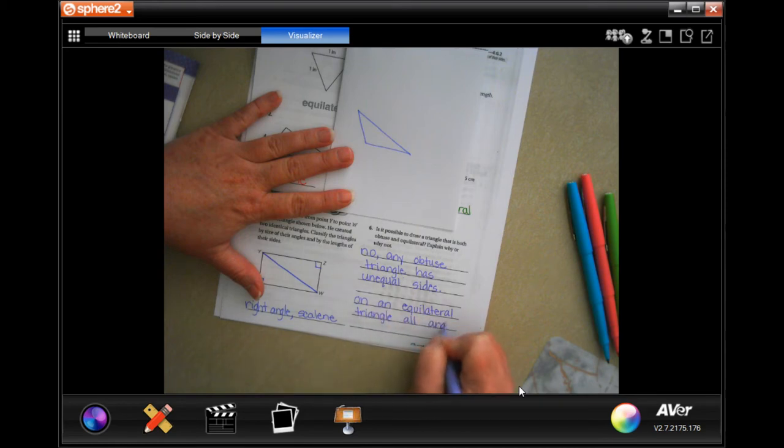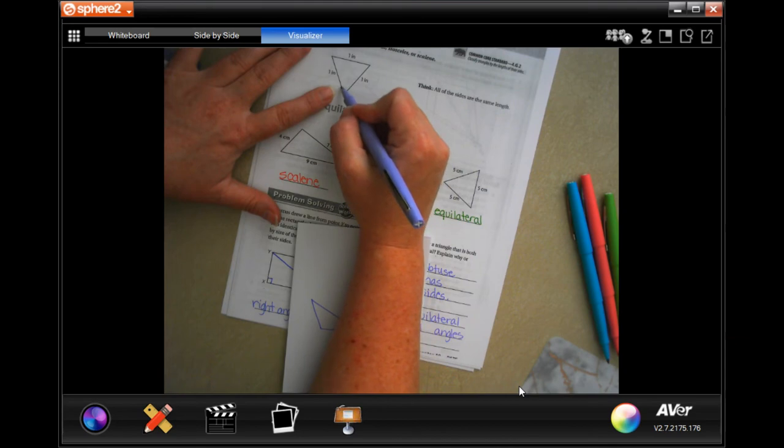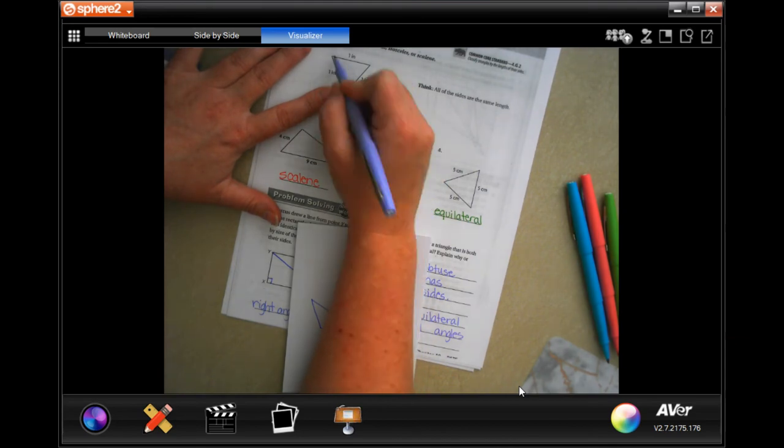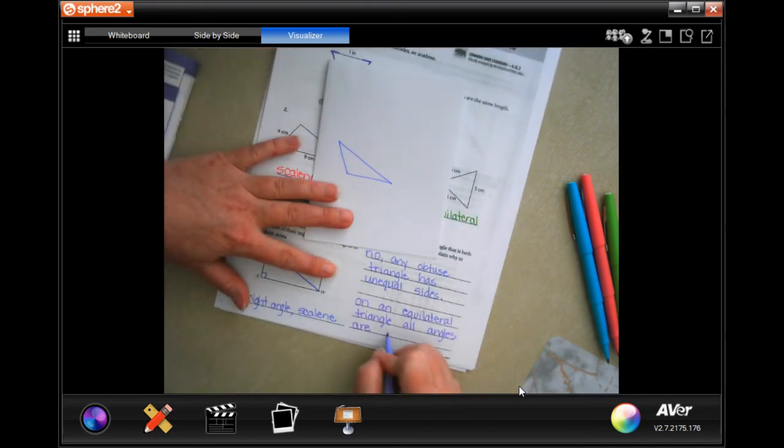All angles are, and I'm going to show you this, on an equilateral, every one of these is smaller than 90 degrees, so all of the angles are acute.